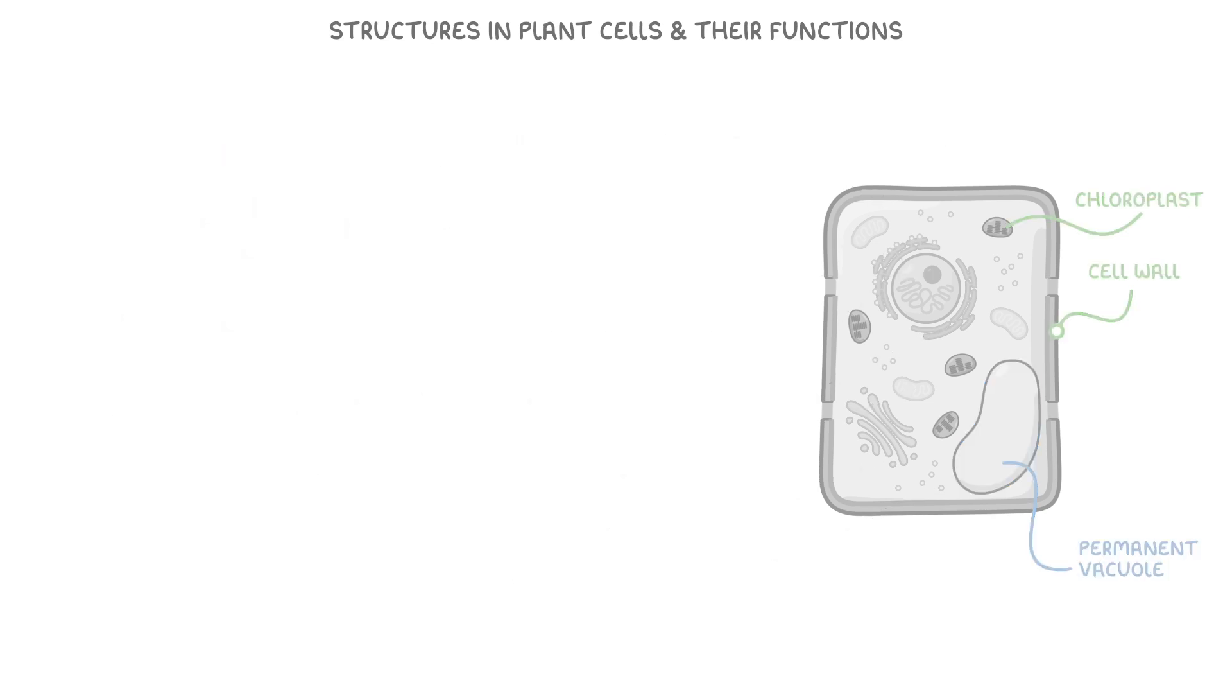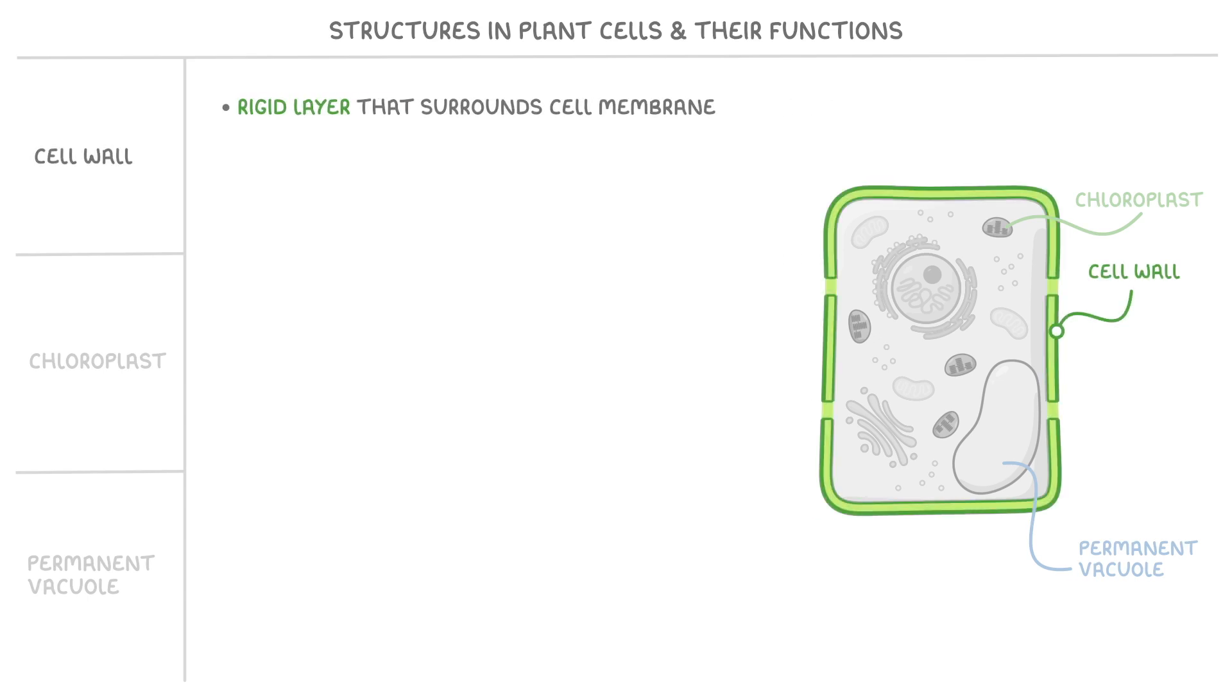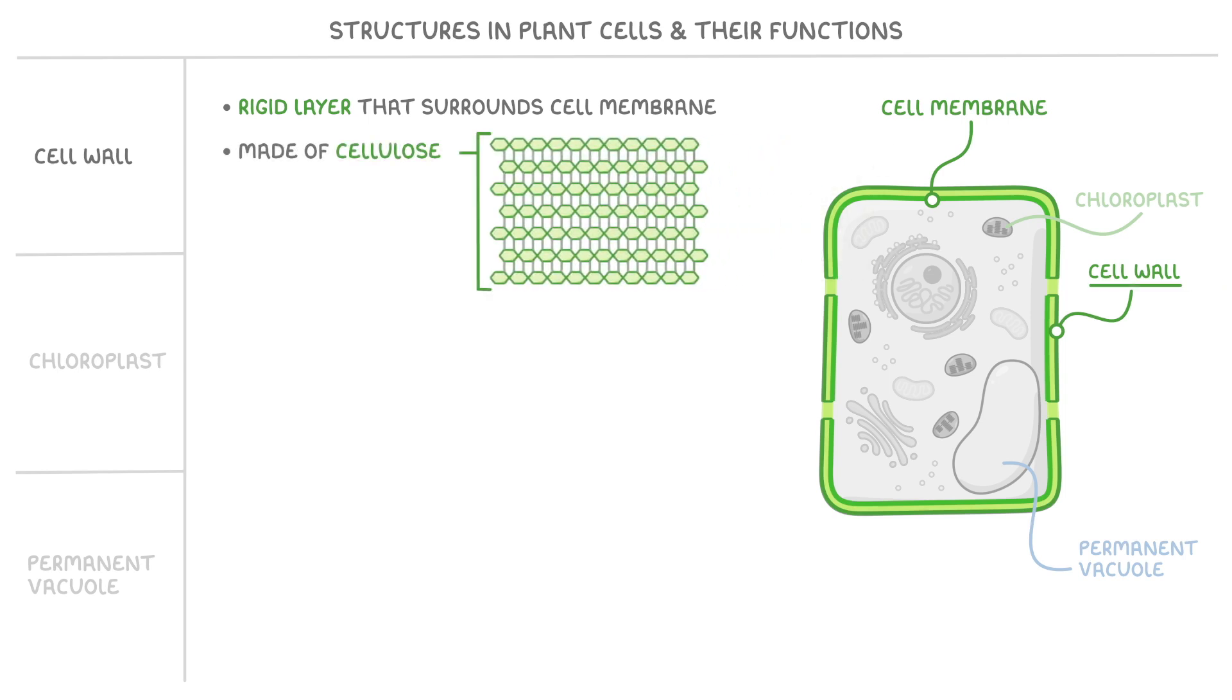So now let's take a closer look at each of these special plant cell structures, starting with the cell wall. The cell wall is a rigid layer that surrounds the cell membrane. So this inner one is the cell membrane, and the outer one is the cell wall. It's made of cellulose, which is a tough, complex carbohydrate, and this hints at one of the main functions of the cell wall, which is that it helps give the plant cell its shape and provides support.